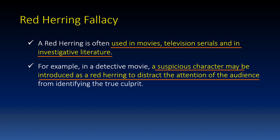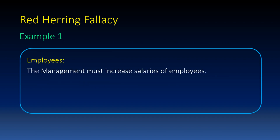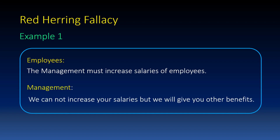Let us try to understand the red herring fallacy with the help of a few examples. Example 1: Employees said, 'Management must increase the salaries of employees.' Then the management replied, 'We cannot increase your salaries, but we will give you other benefits.'